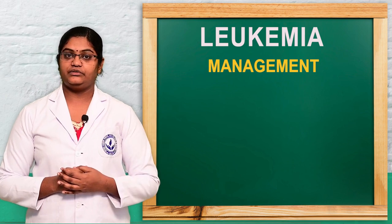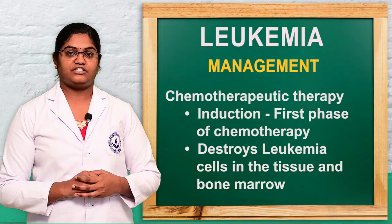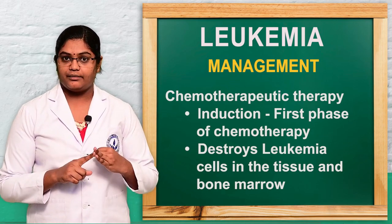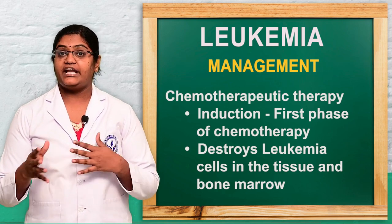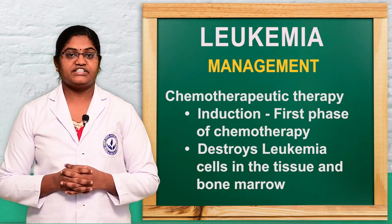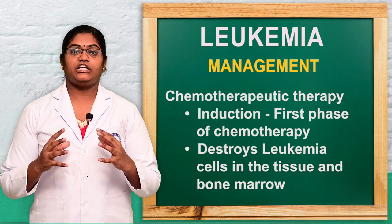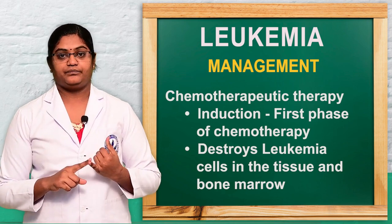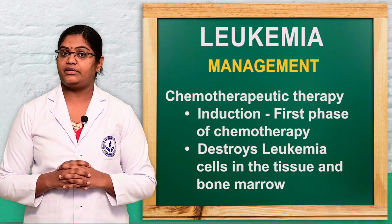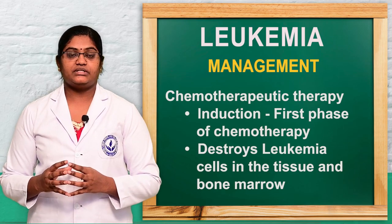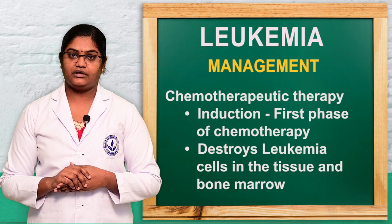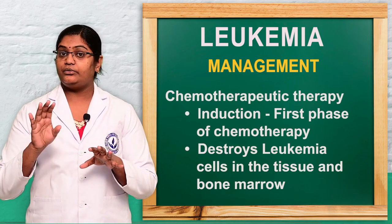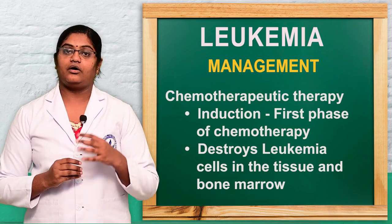After diagnostic evaluation and confirmation of leukemia, we start treatment. Cancer treatments include chemotherapy, radiation therapy, and bone marrow transplantation. For chemotherapy, there are mainly four phases. The first is the induction phase, where low-dose drugs are used to kill or eradicate the leukemic cancer cells.